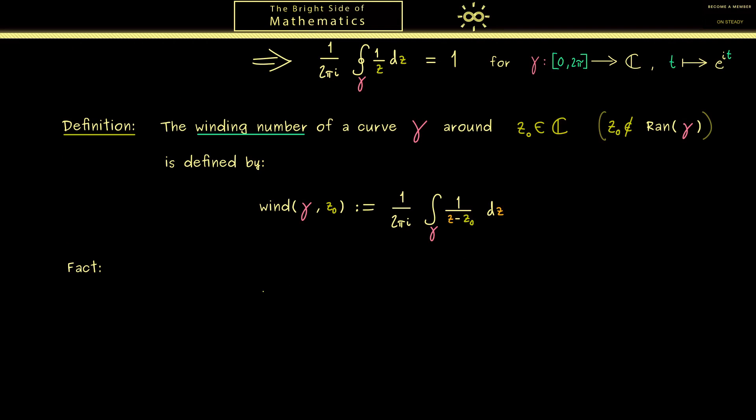Let's formulate the fact we have for closed curves separately. Now if γ is closed, we want to show that the winding number around the point z₀ is an integer. Of course we know this wind(γ, z₀) is a well-defined complex number, but in this case now it's also an integer. So we can write it's an element of ℤ.